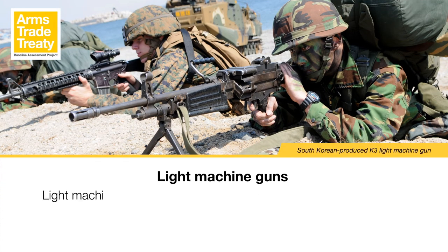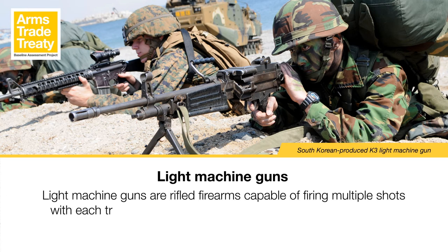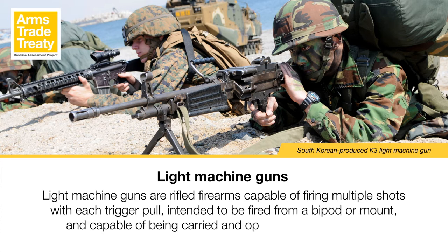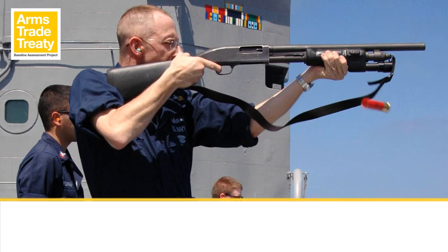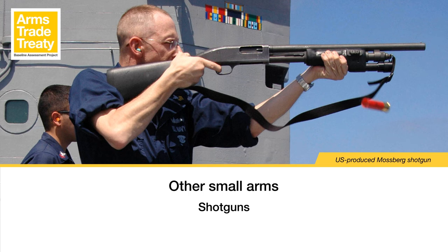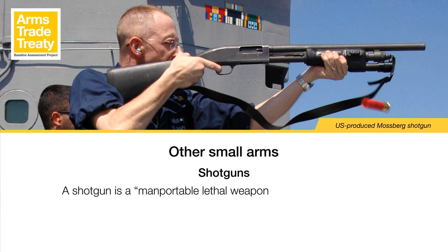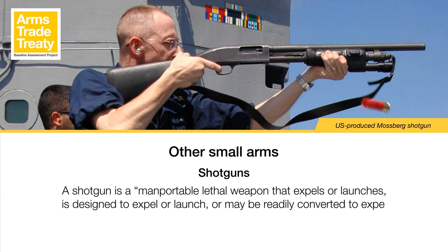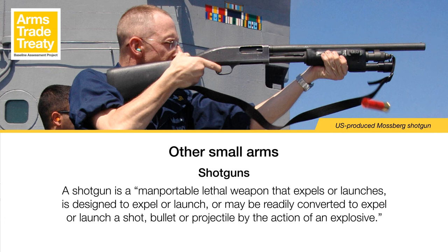Light machine guns are rifled firearms capable of firing multiple shots with each trigger pull, intended to be fired from a bipod or mount and capable of being carried and operated by an individual. UN member states have reported international transfers of general-purpose machine guns, or GPMGs, in the light machine gun subcategory. The ATT and UN Register reporting forms also provide a subcategory for other small arms. Several ATT states parties reported on international transfers of shotguns in their first ATT annual reports, filing such information in the other small arms subcategory. A shotgun is a man-portable lethal weapon that expels or launches, or may be readily converted to expel or launch, a shot, bullet or projectile by the action of an explosive.